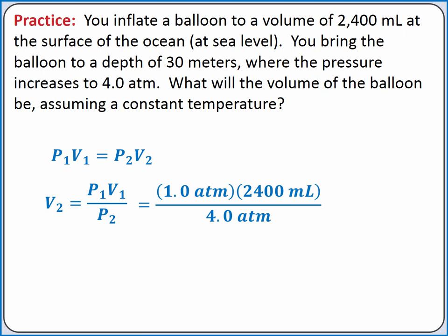P2 is 4 atmospheres. Our units of atmospheres cancel out, and we're left with units of milliliters. Solving the equation, we get 600 milliliters.